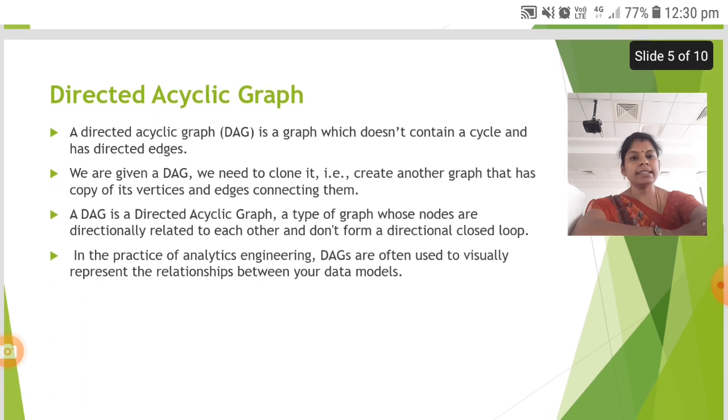The next is the directed acyclic graph. A directed acyclic graph DAG is a graph which does not contain a cycle and has directed edges. We are given a DAG, we need to clone it, i.e. create another graph that has copy of its vertices and edges connecting them.